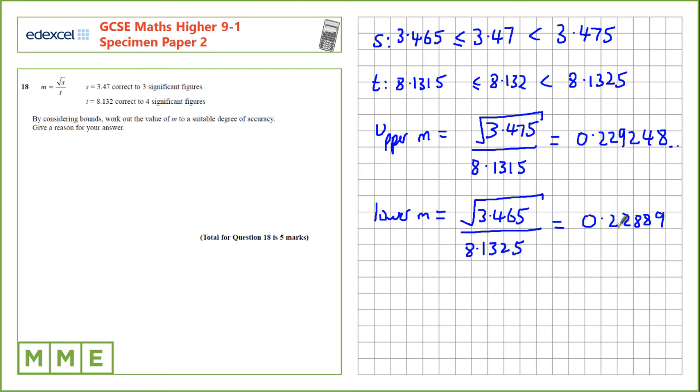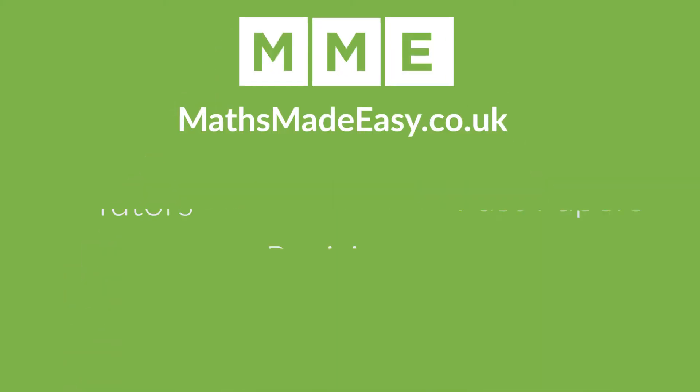If we look at both of these bounds, they both round to 0.229 to 3 significant figures. So, that gives us our estimate for the actual value of m. Thank you.